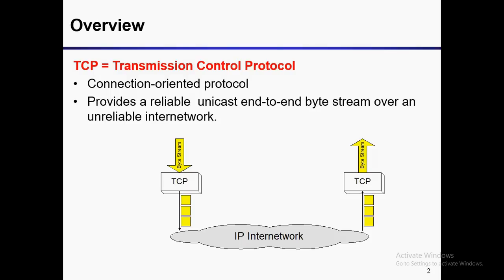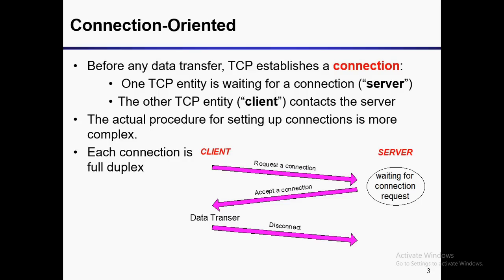TCP is connection-oriented, meaning before any data transfer, TCP establishes a connection with the help of a process called three-way handshake. This three-way handshake ensures that the client is available to receive the data.